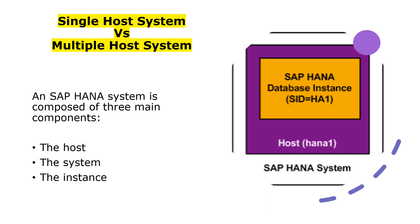An instance is a set of SAP HANA system components that are installed on one host. A system can be distributed as several instances among several hosts, but each instance in a multi-host system must have the same instance number. The instance number is a two-digit number, like 00, 01, 02, or 03 — the same format as an SAP application server instance number.